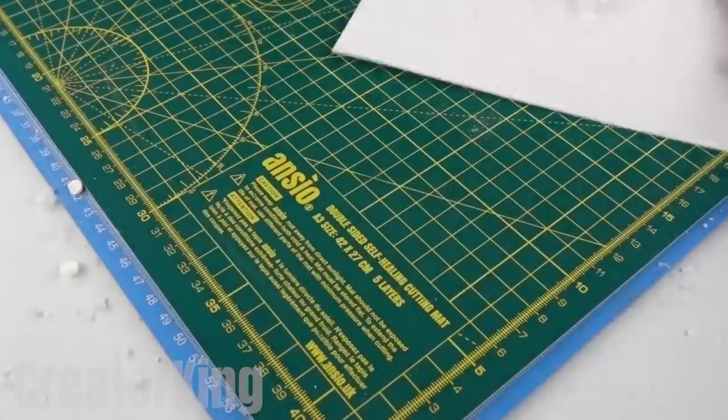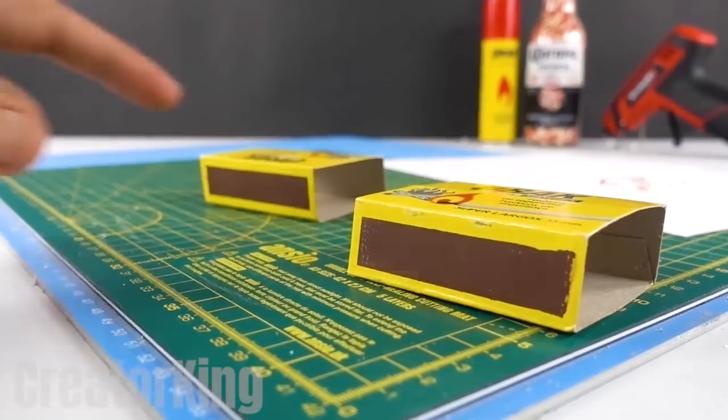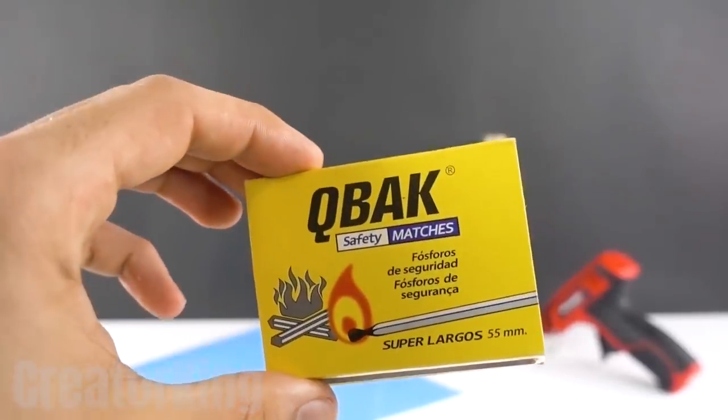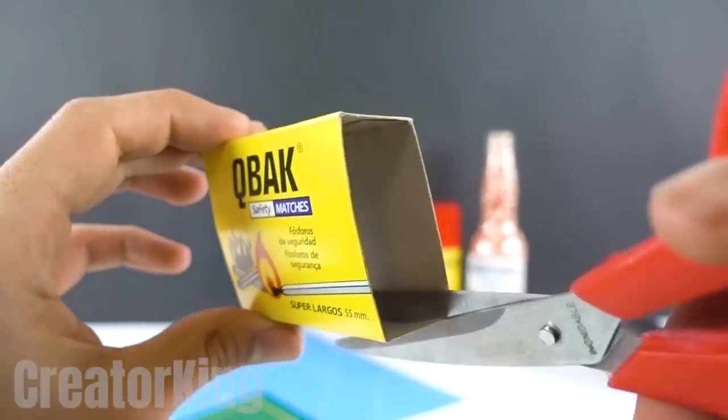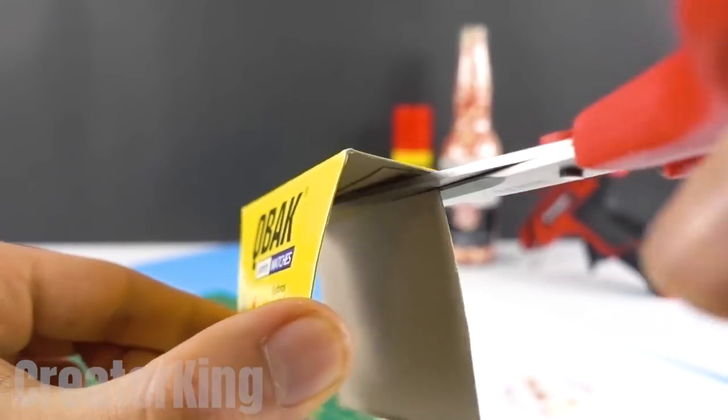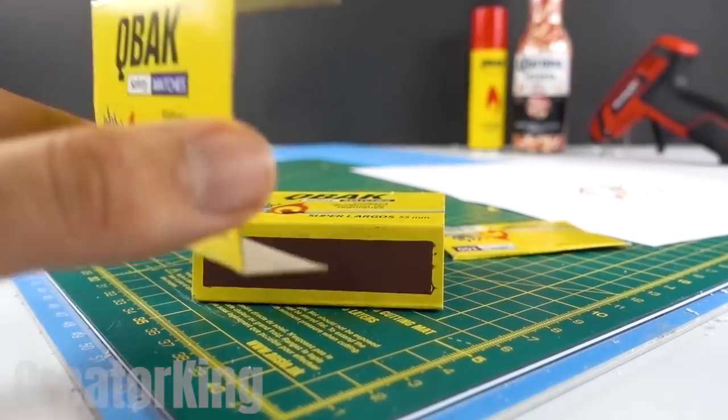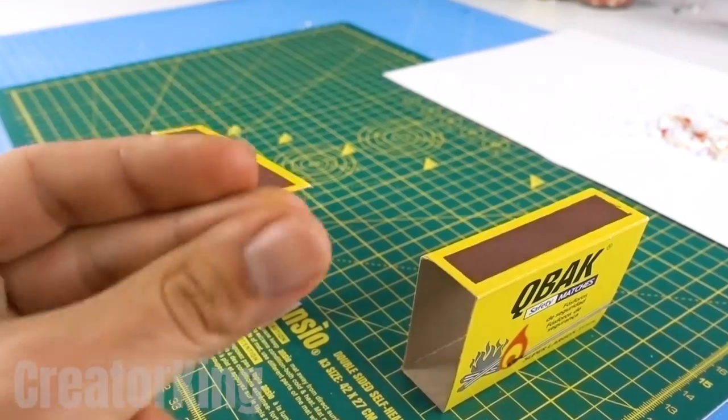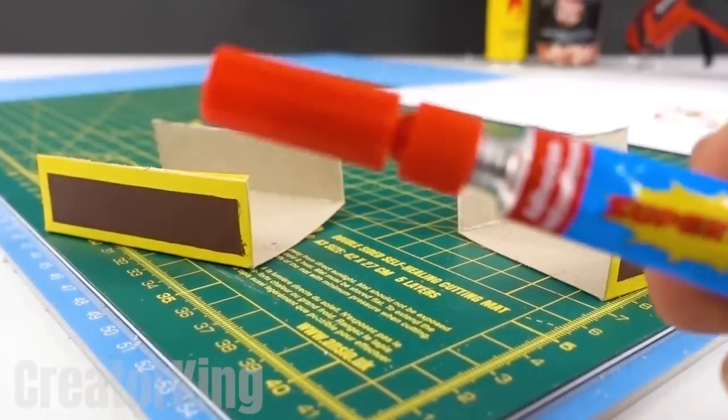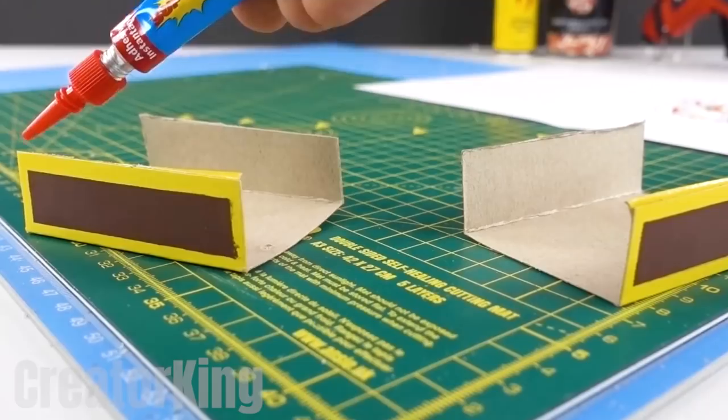I hope you don't want to throw away those matches, because we will need two of the box lids next! Cut out one of the wide parts with a pair of scissors and repeat the same step with the other box. Now, with the help of your favorite instant glue, we will join them together like this.